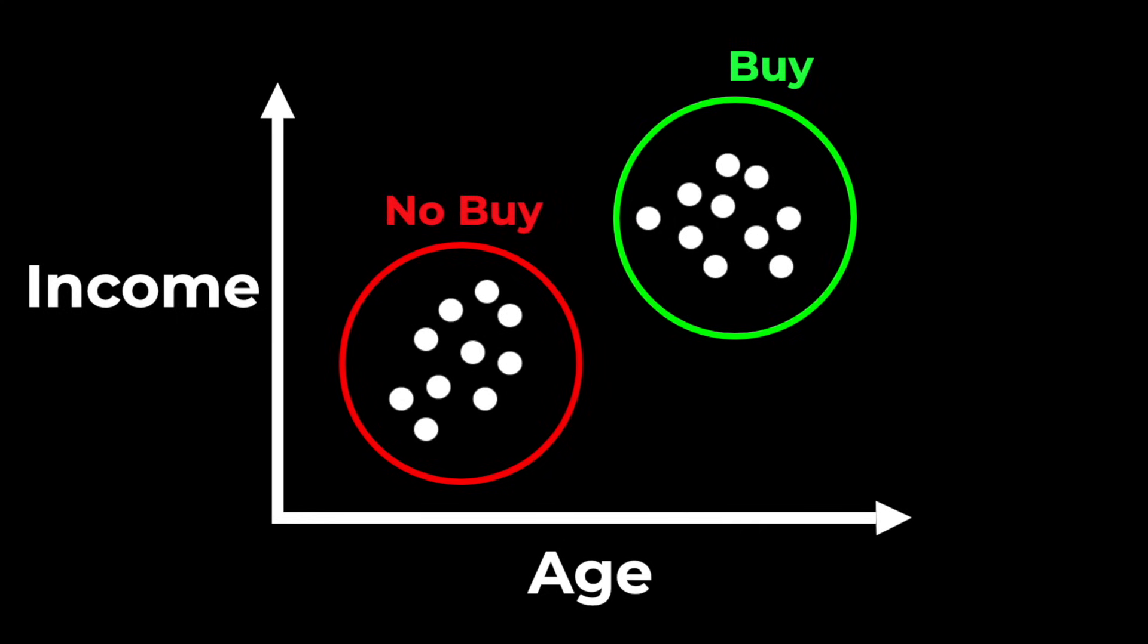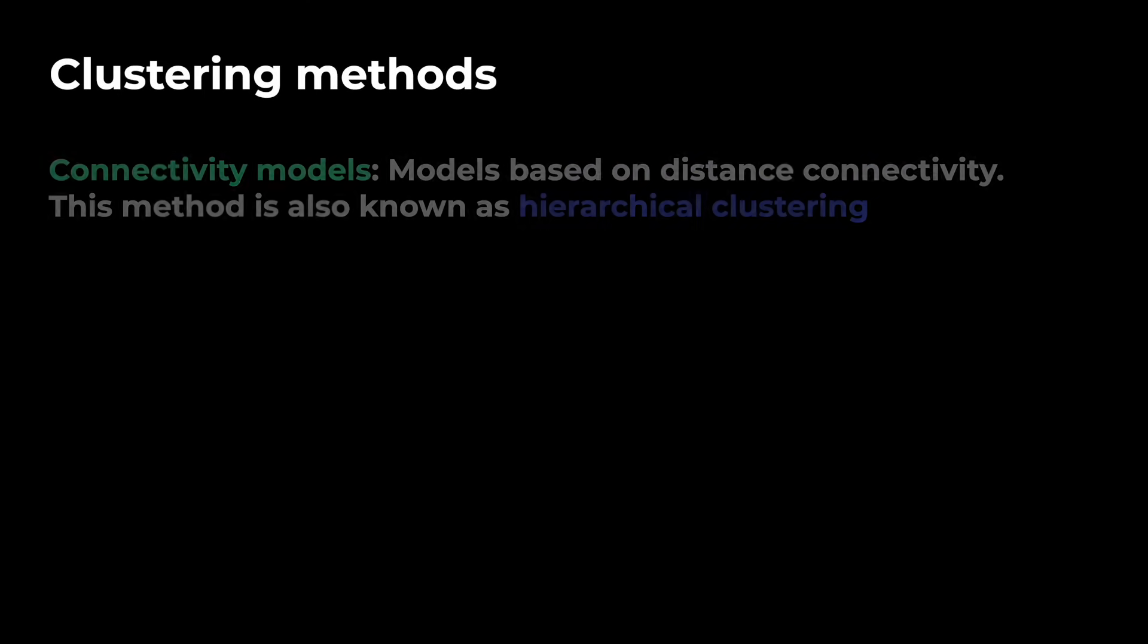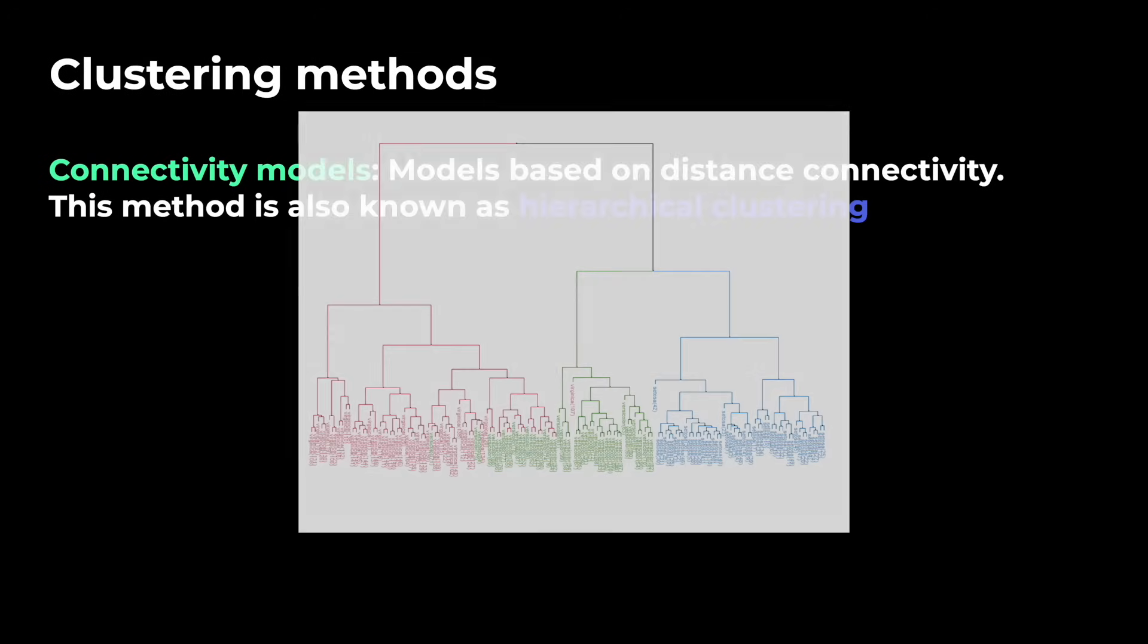Of course this example is a little bit oversimplified and real world data oftentimes does not look that simple. That's why the model needs to use a more sophisticated way to find the clusters. There are different approaches. For example connectivity models. Here we build models based on distance connectivity. This method is also known as hierarchical clustering.